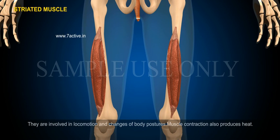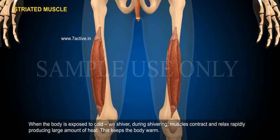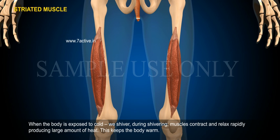They are involved in locomotion and changes of body postures. Muscle contraction also produces heat. When the body is exposed to cold, we shiver. During shivering, muscles contract and relax rapidly, producing a large amount of heat. This keeps the body warm.